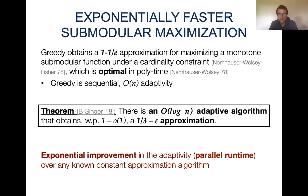It is known since the 70s that for the canonical problem of maximizing a monotone submodular function under cardinality constraints, there exists a constant factor 1-1/e algorithm, which is a simple greedy algorithm for submodular maximization. We also know that it is the optimal approximation achievable in polynomial time.